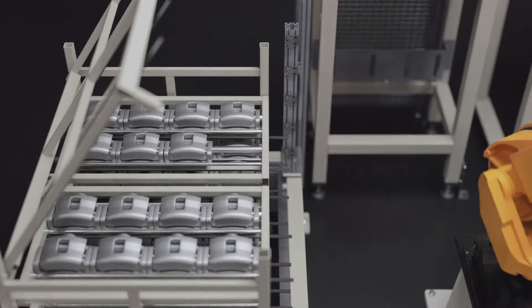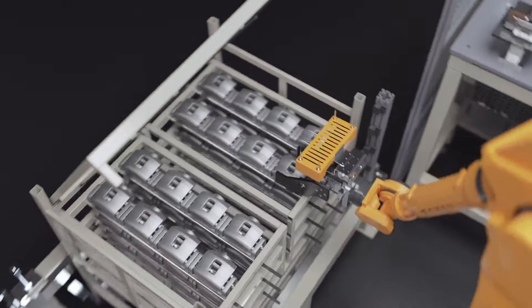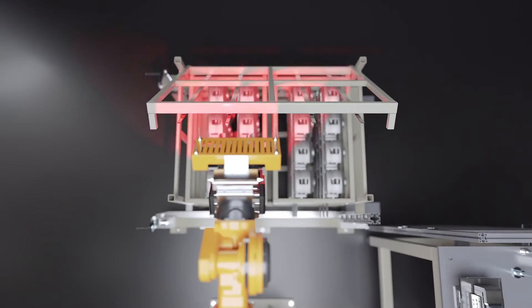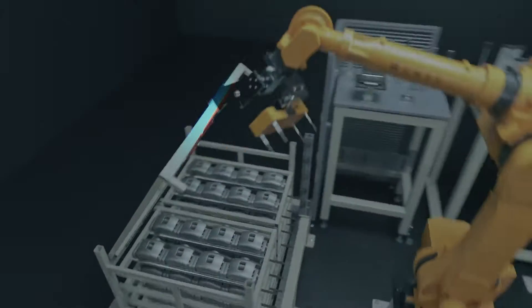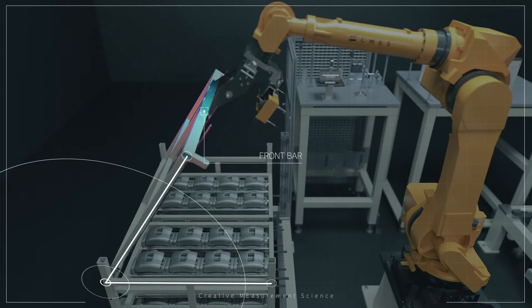When the loading of objects onto each layer is completed in the pallet, the 3D vision sensor automatically recognizes the location of the front bar and the robot grips it and lowers it.